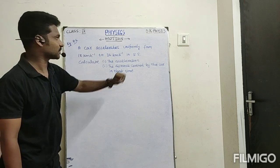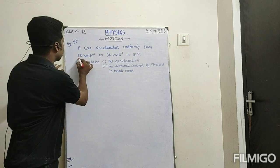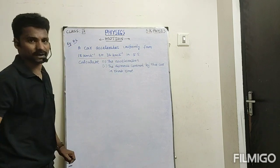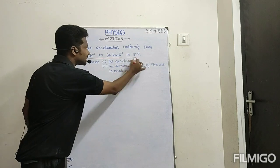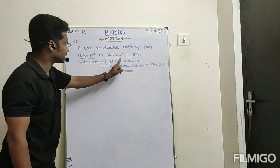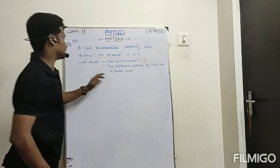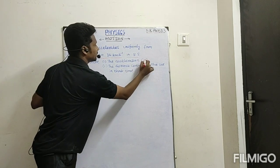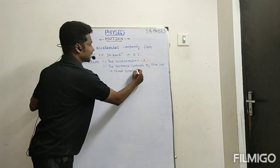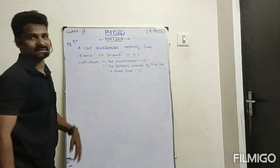A car accelerates uniformly from 80 km per hour to 36 km per hour in 5 seconds. Calculate the acceleration — that is 'a' — and the distance covered by the car in that time, that is displacement 's'.